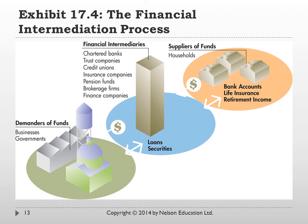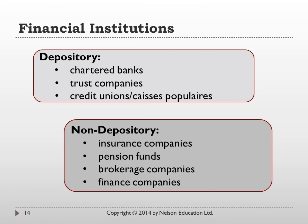In Canada, there are really four pillars of the financial system. Those typically are banks, trust companies, insurance companies, and investment dealers. Chartered banks are depository financial institutions — they can take deposits from individuals. These include credit unions, trust companies, and chartered banks. Today there are about 21 domestic banks or Canadian-owned banks in Canada, as well as about 25 subsidiaries of foreign banks such as American or European banks that do business in Canada.